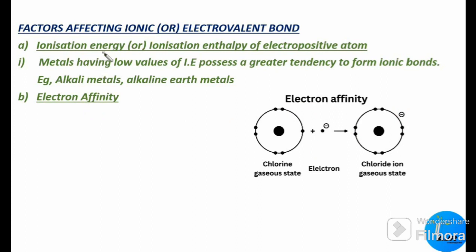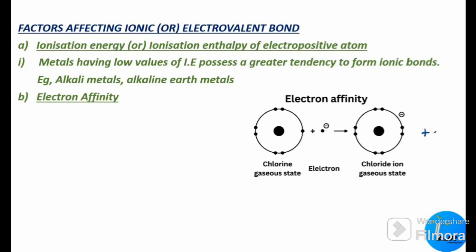What is the difference between electron affinity and ionization energy? Electron affinity is the amount of energy released when an electron is added to an atom, whereas ionization energy is the amount of energy required to remove an electron from the valence shell of an atom. For example, when an electron is added to a gaseous chlorine atom, it is converted to a chloride ion, and the energy released during that process is the electron affinity.